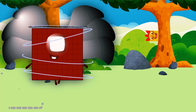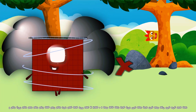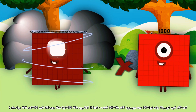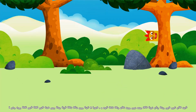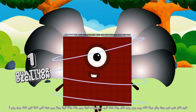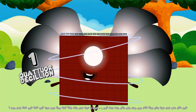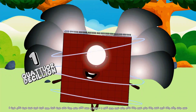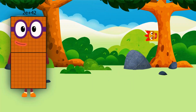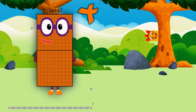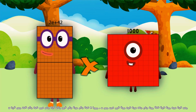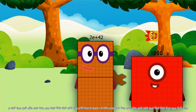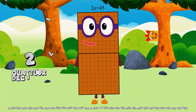1 tredecillion multiplied by 1,000 equals 1 quadwardessillion. 2 tredecillion multiplied by 1,000 equals 2 quadwardessillion.